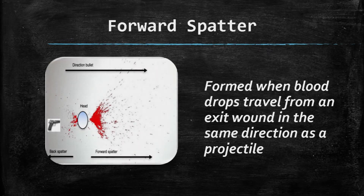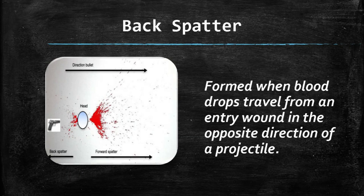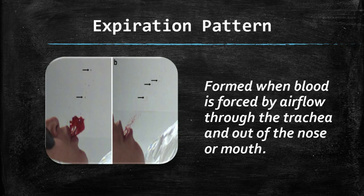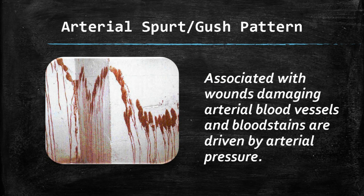A forward spatter is formed when blood drops travel from an exit wound in the same direction as a projectile. An expiration pattern is formed when blood is forced by air flow through the trachea and out of the nose or mouth. An arterial spurt or gush pattern is associated with wounds damaging arterial blood vessels, and bloodstains are driven by arterial pressure.